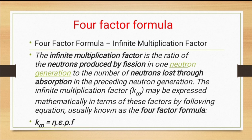The infinite multiplication factor k-infinity is expressed mathematically by the following equation, known as the four factor formula: k-infinity is equal to eta into epsilon into p into f. We are going to see what these terms are — which are included in the reproduction factor or the four factor formula — in detail in today's lecture.